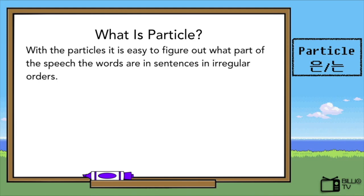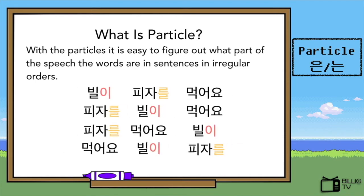With the particles, it is easy to figure out what part of speech the words are, even in sentences with irregular orders. We can see four sentences with the same meaning but in different orders. In spite of the complicated orders, these sentences all make sense. The first one is the common word order of Korean sentences: subject, object, and verb. The last three are in different orders, but we can identify which is which with the particles attached next to the nouns.